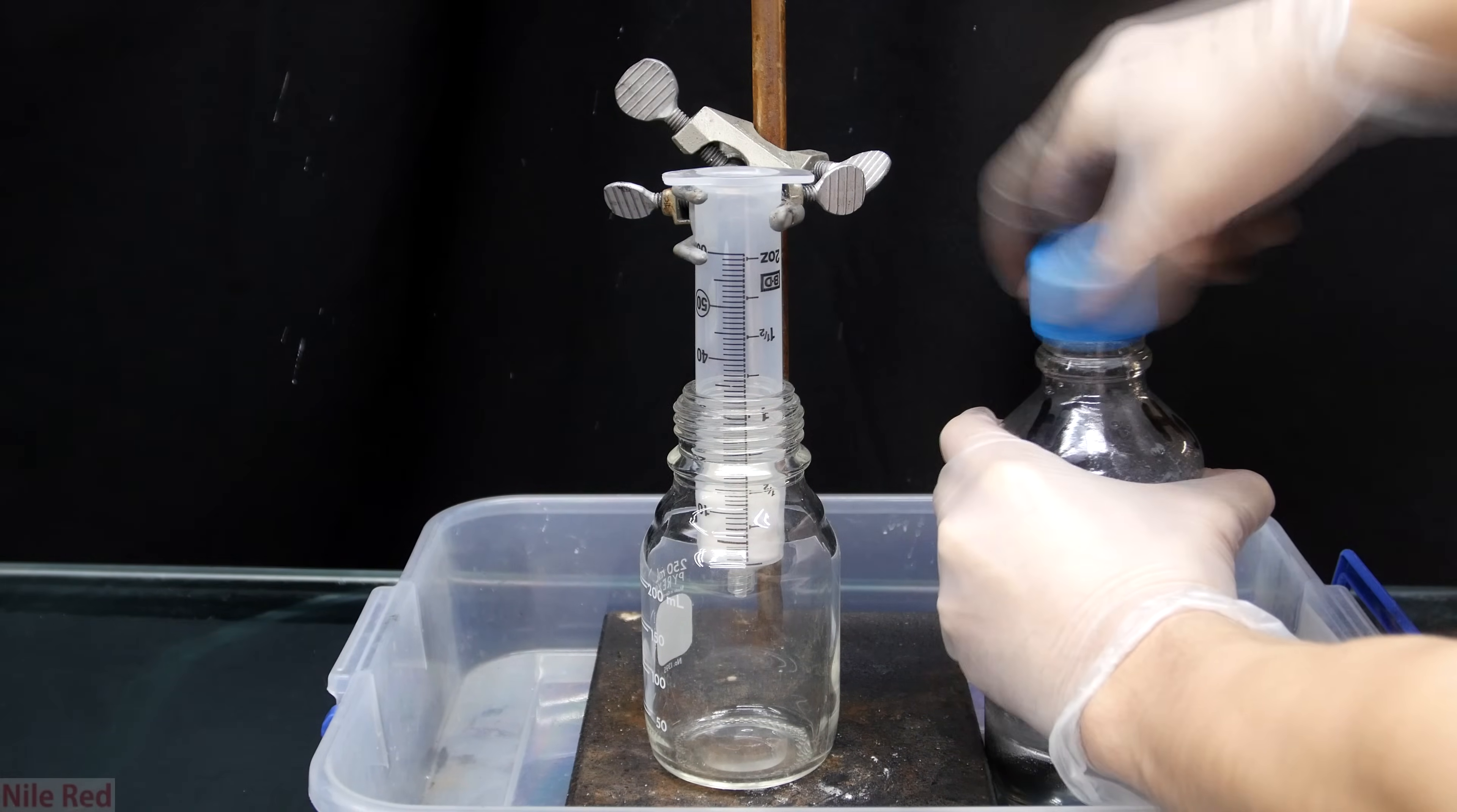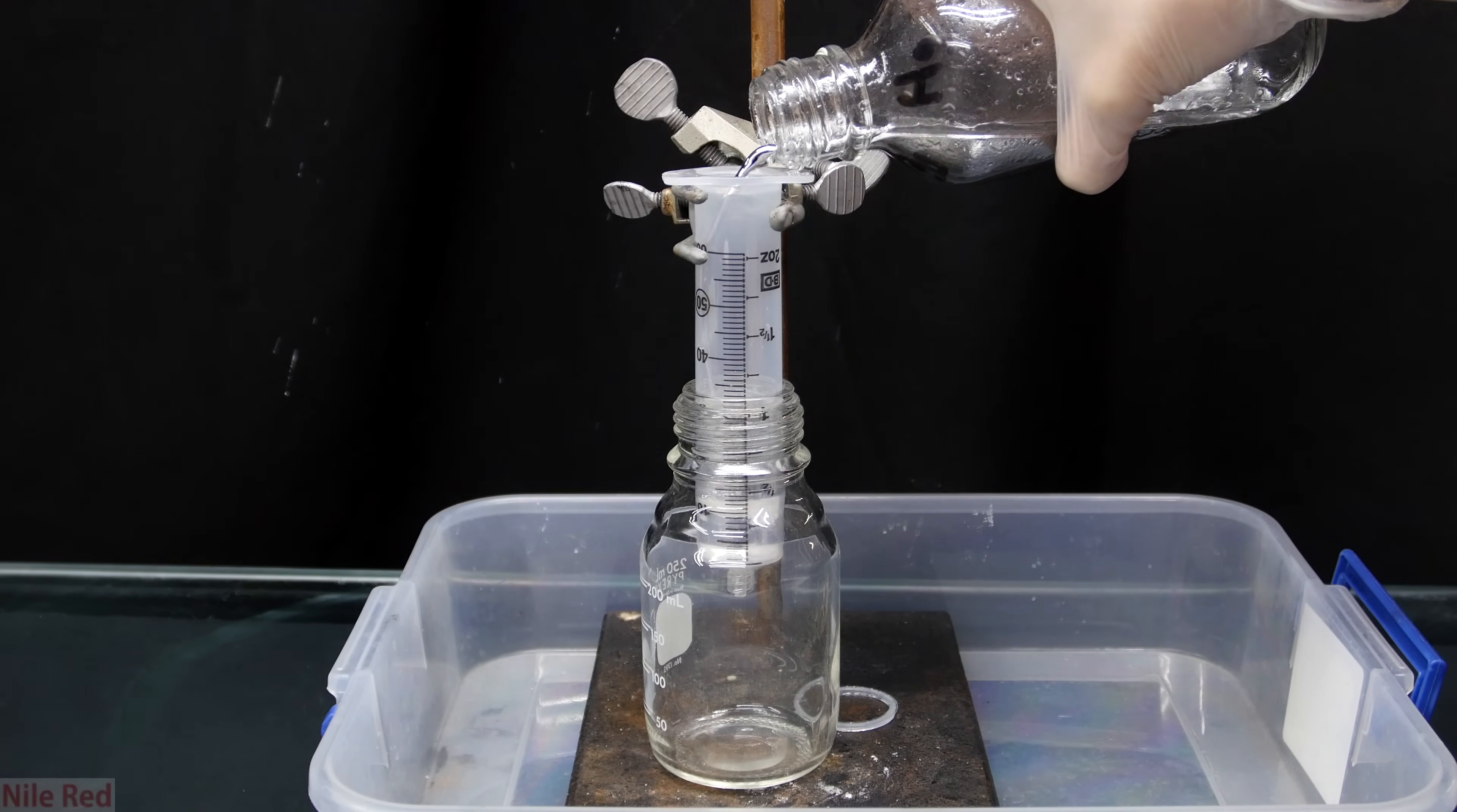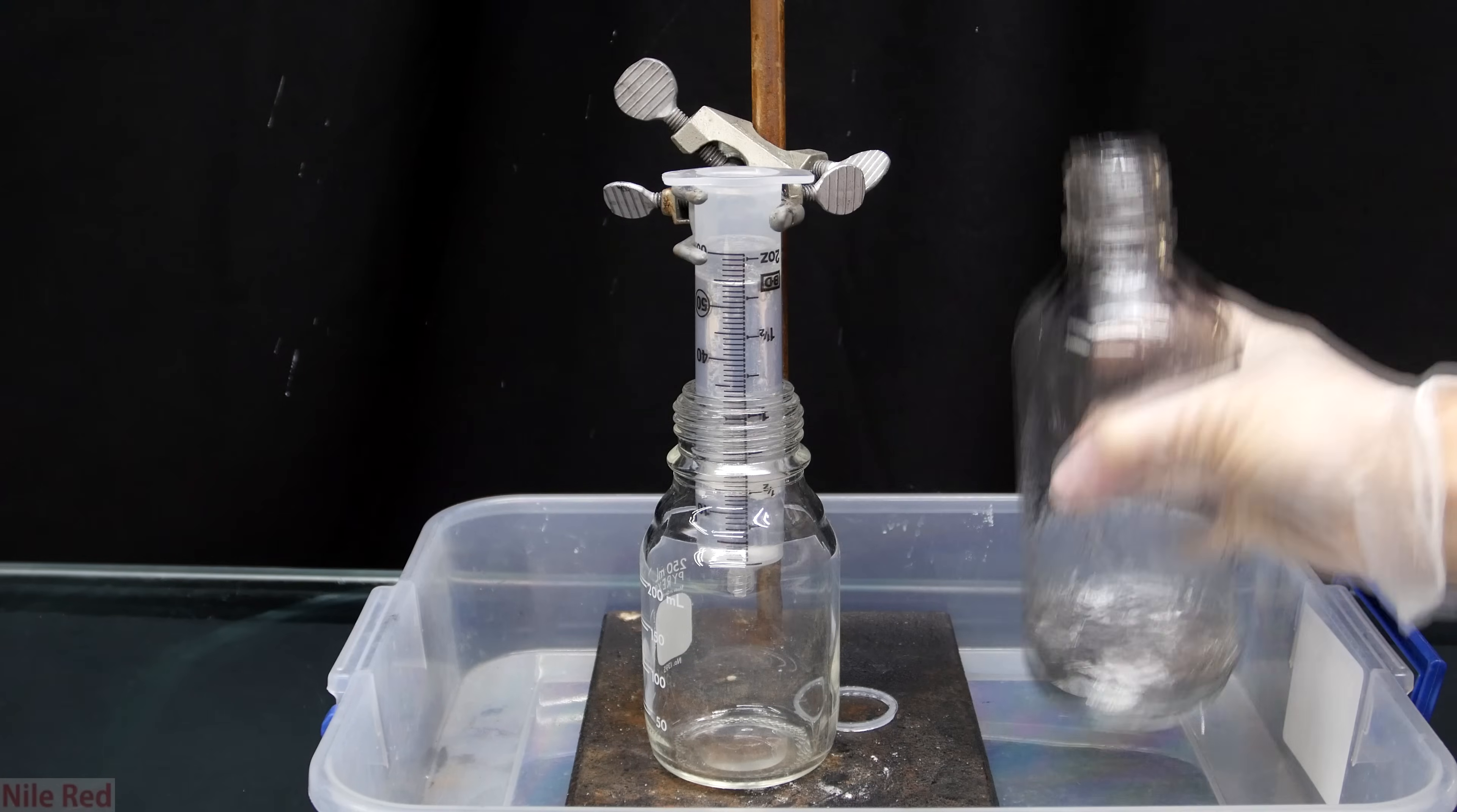When I'm ready I open my mercury bottle and I start to pour it into the syringe. When you pour it in it's important to be careful because you don't want to miss the syringe and have mercury splash everywhere. Also if you pour it in too quickly the mercury is heavy enough that it can displace your cotton filters.